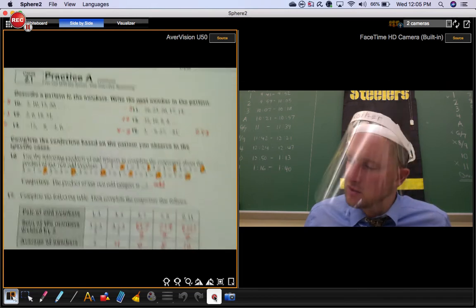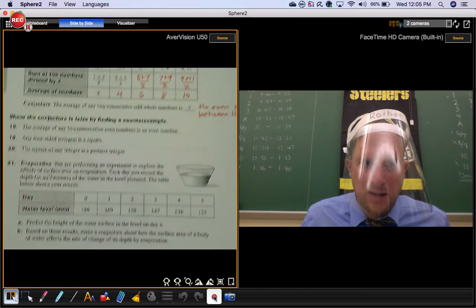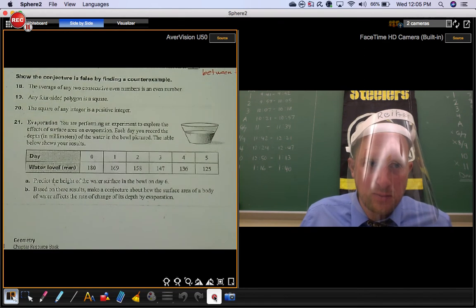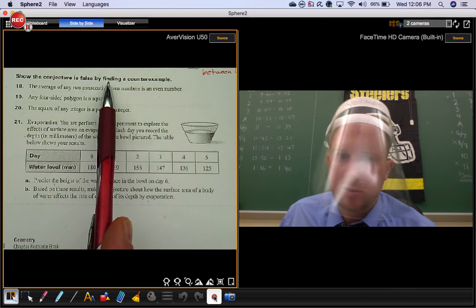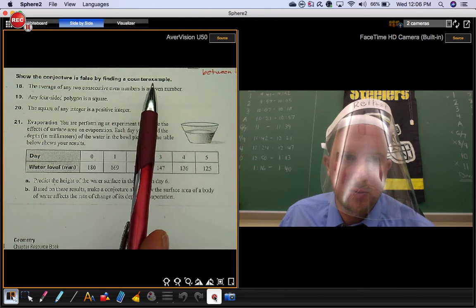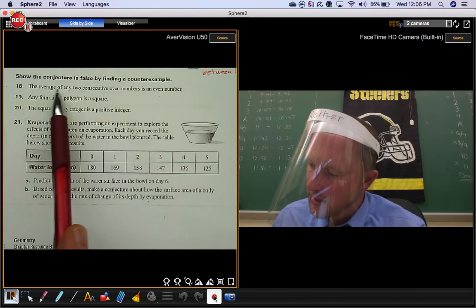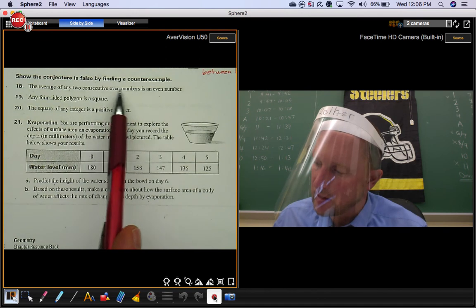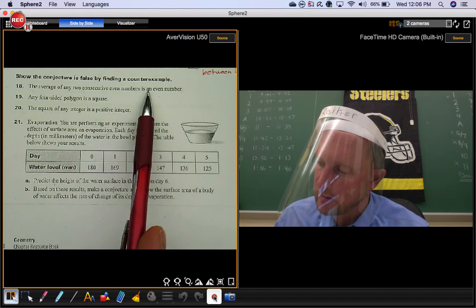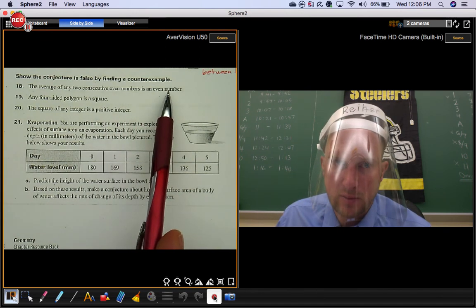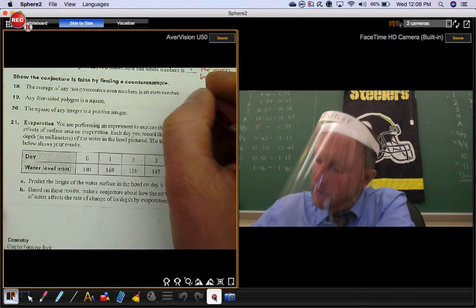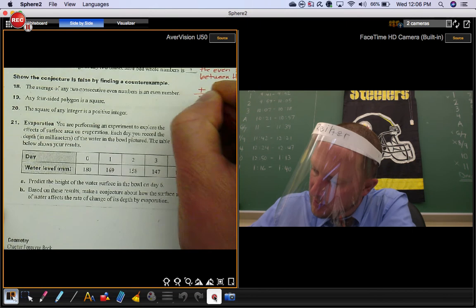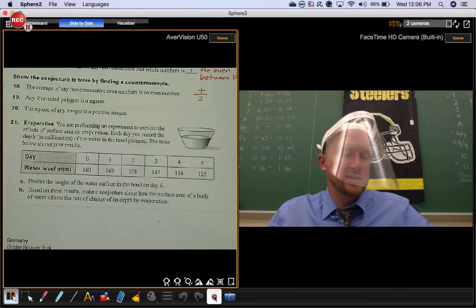This is practice A for section 2.1. We're looking at the back of the worksheet. We want to show the conjecture is false by finding a counterexample. The average of any two consecutive even numbers is an even number. So we want to average two consecutive even numbers. That means we're going to add them and divide by two.